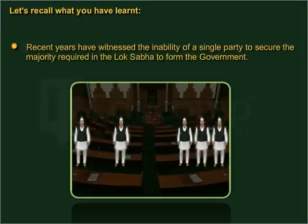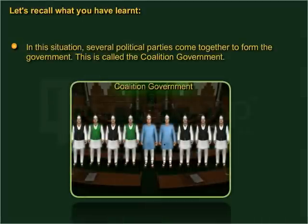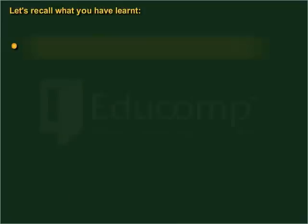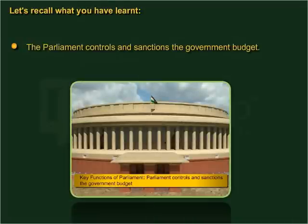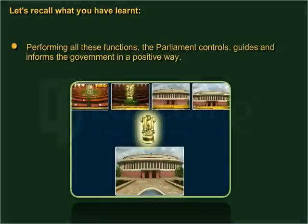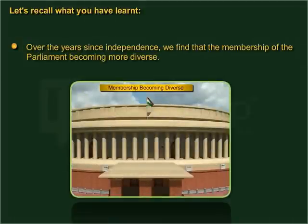Recent years have witnessed the inability of a single party to secure the majority required in the Lok Sabha to form the government. In this situation, several political parties come together to form the government. This is called the coalition government. The Parliament also plays a crucial role in keeping a check on the national government through devices like Question Hour. The Parliament controls and sanctions the government budget, makes laws pertaining to the governance of the country, and performing all these functions, controls, guides and informs the government in a positive way. Over the years since independence, we find that the membership of the Parliament has become more diverse.